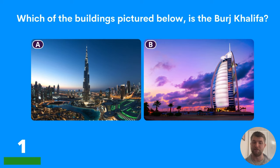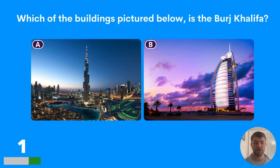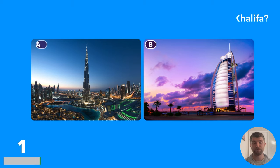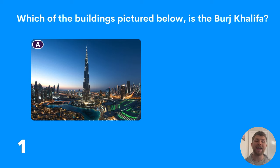Question one: which of the buildings pictured below is the Burj Khalifa? You've got an A and a B there — two options. Which one is the Burj Khalifa? The answer is A. Well done if you got that one right.